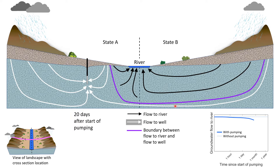At about 20 days, deep groundwater in state B begins to flow to the well in state A while shallower groundwater continues to flow toward the river. Thus, the well has not only captured some of state A's groundwater that would migrate to the shared river if there were no pumping, but has also captured some of the groundwater from state B. The flow to the river continues to decrease because the well is capturing more groundwater that flowed to the river prior to pumping.